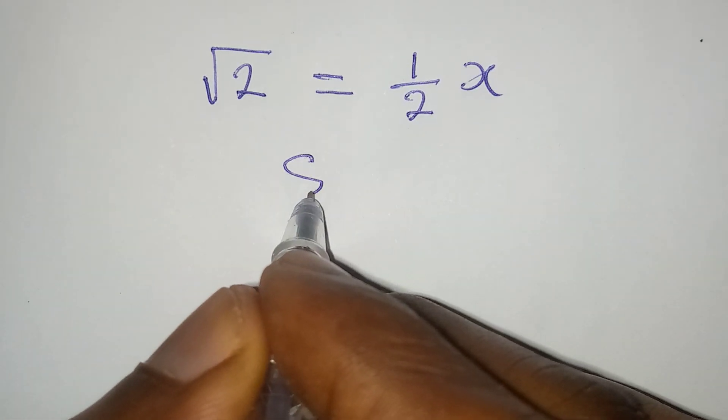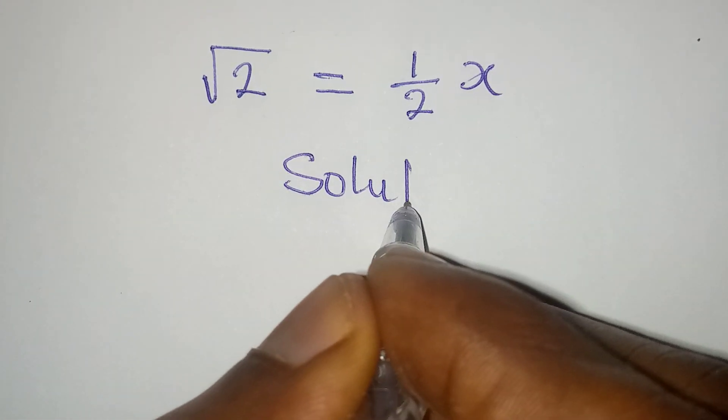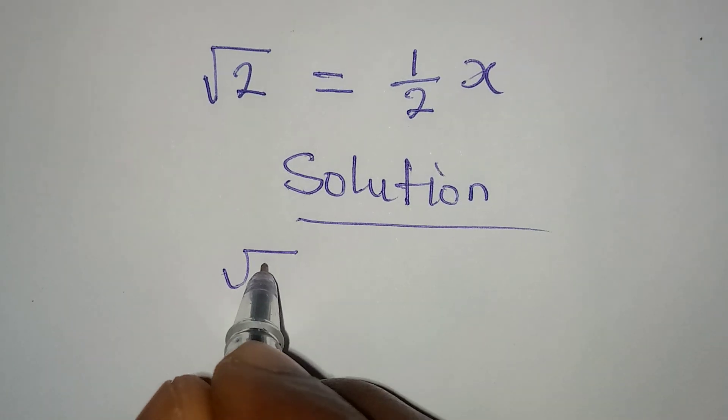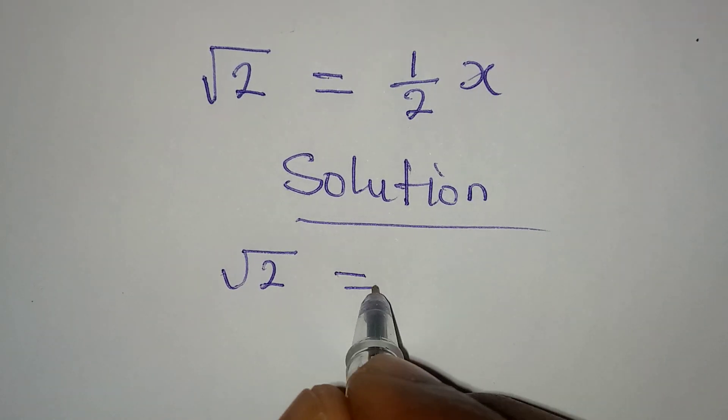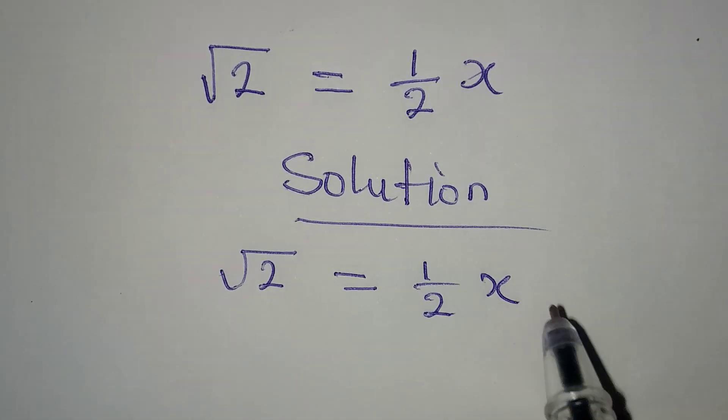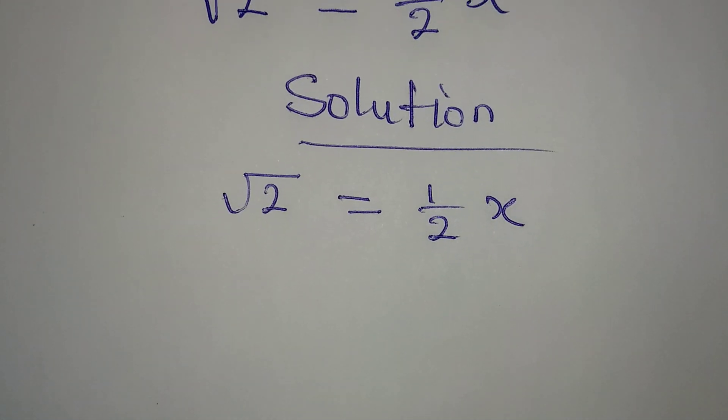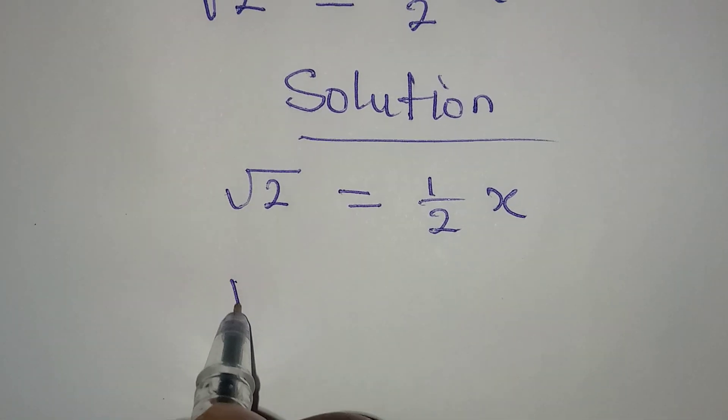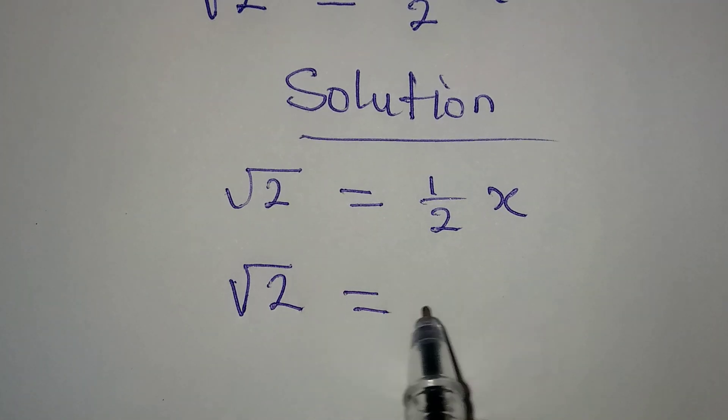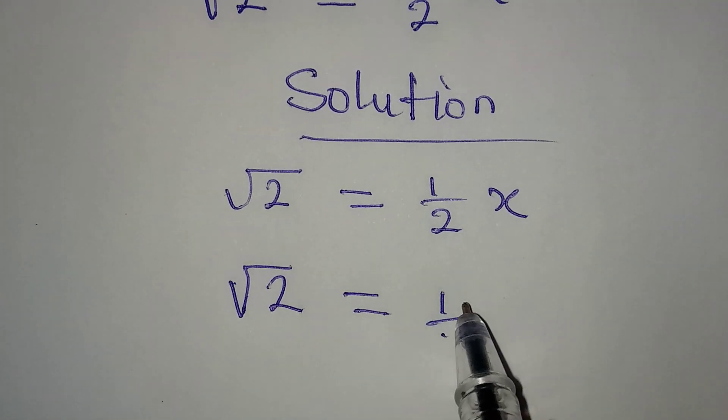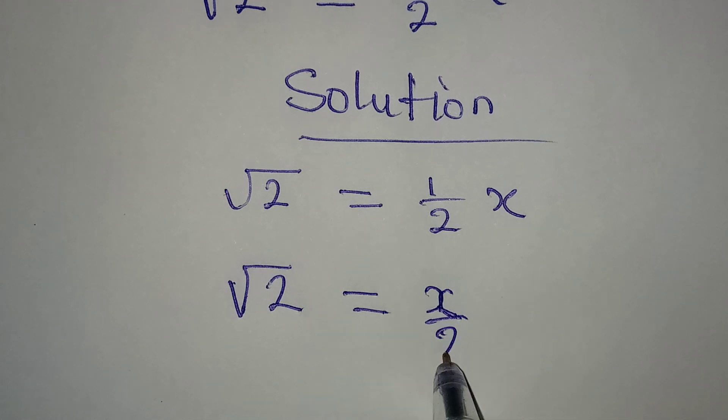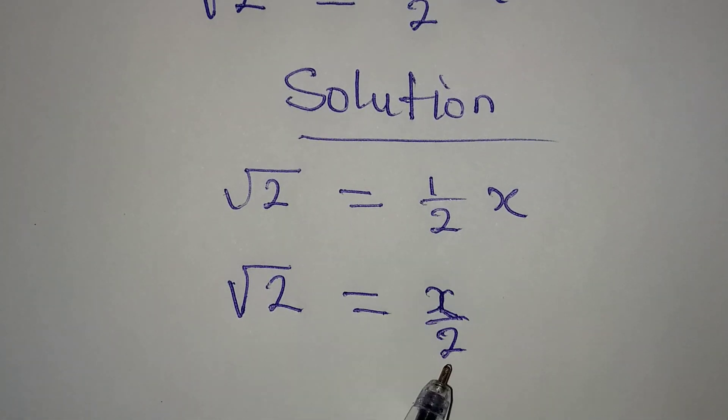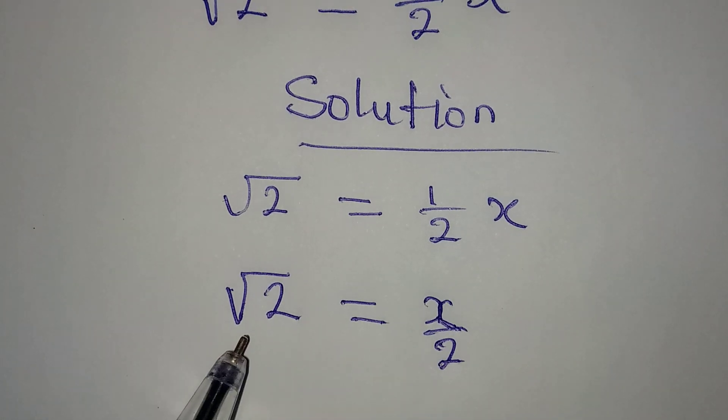Hello everyone, let's provide the solution to this problem: square root of 2 equals 1 over 2X. You should understand that this is the same thing as square root of 2 being equal to 1 over 2. Let's call it X over 2 because 1 times X is X, then over 2.